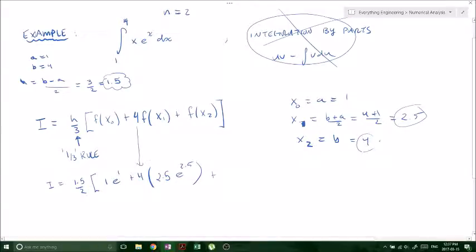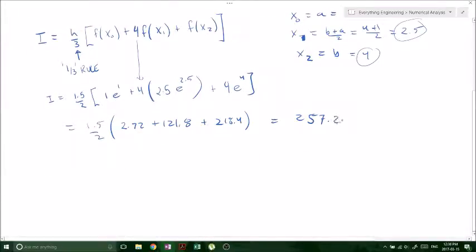And then we got plus f of x2. And our x2 was 4, so we got 4 e to the 4. And this equals 1.5 over 2 times 257.20. And that's it.